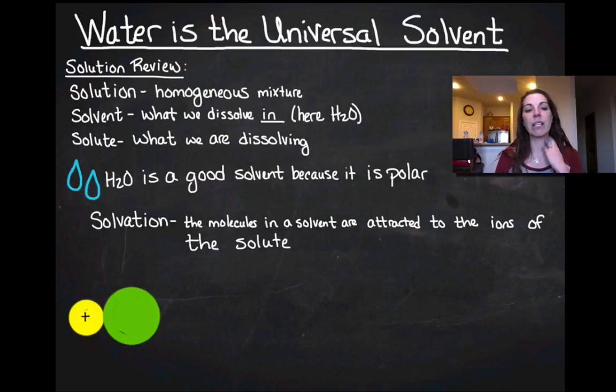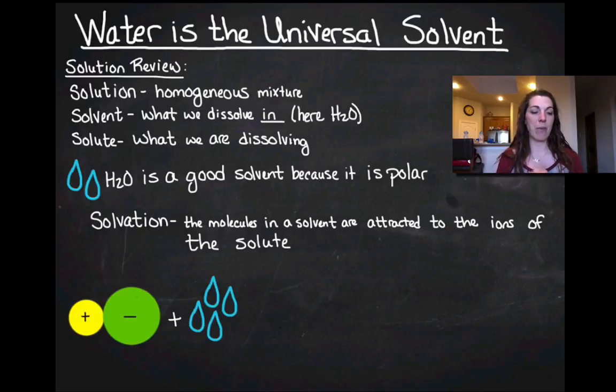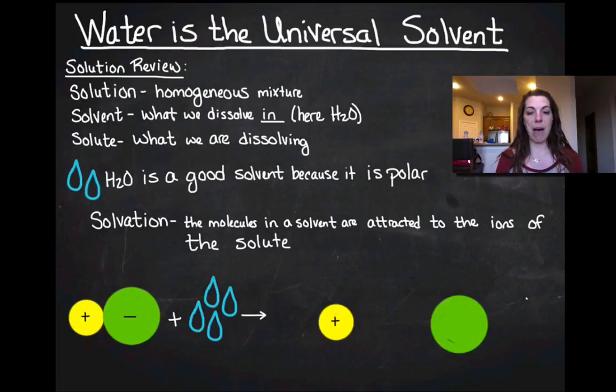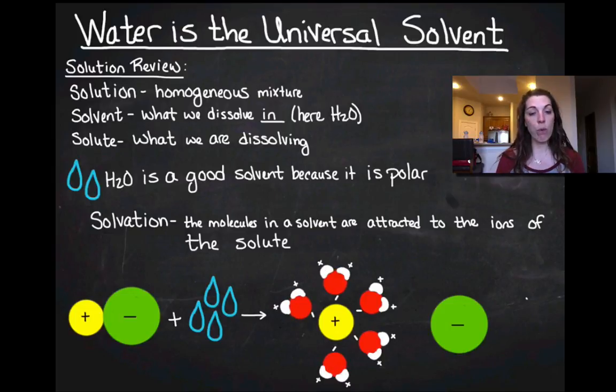So let's say that I have an ionic molecule. It's going to have a positive charge and a negative charge, and I mix it with some water. What's going to happen is I'm going to get my positive and my negative molecules disassociating. Now, they're in water.